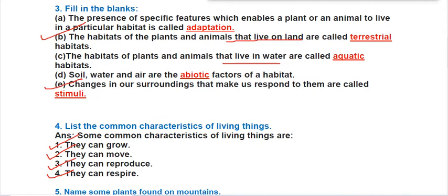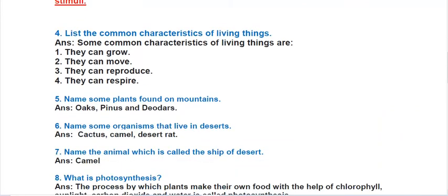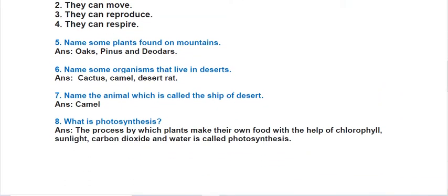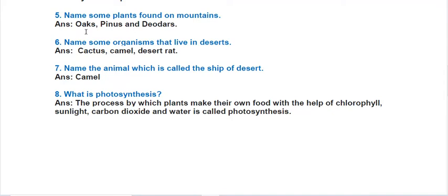Question five: name some plants found on mountains. Some plants found on mountains are oaks, pinus, and deodars. Name some organisms that live in the desert. Some organisms that live in the desert are cactus, camel, and desert rat.